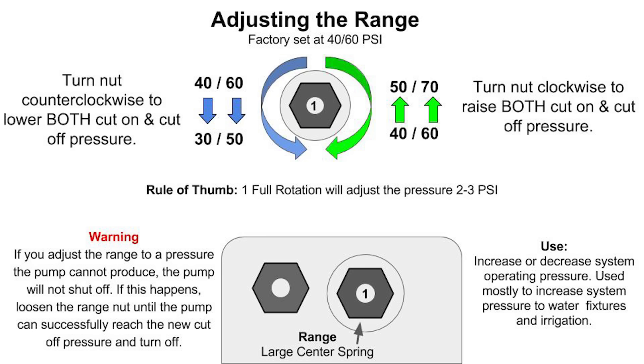Again, the general rule of thumb is one full turn is about two to three PSI. This is the recommended adjustment if you need to increase the system operating pressure.